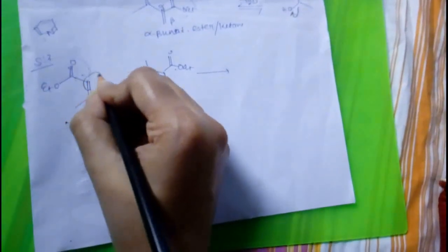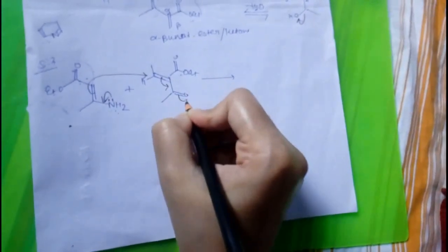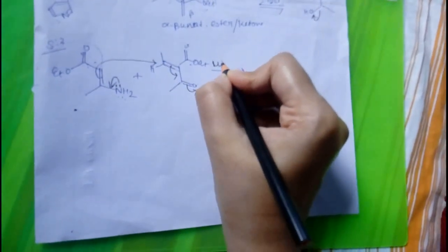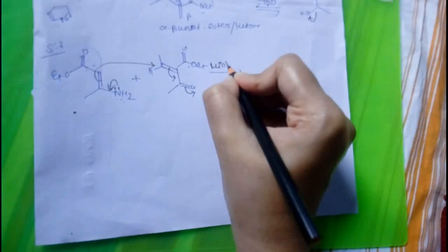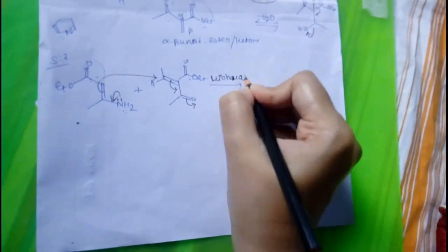Now, Michael addition takes place. The bond will rotate there and it will form. I'm using the Michael addition here.